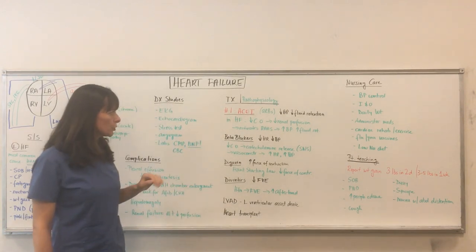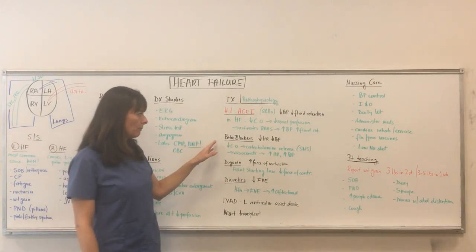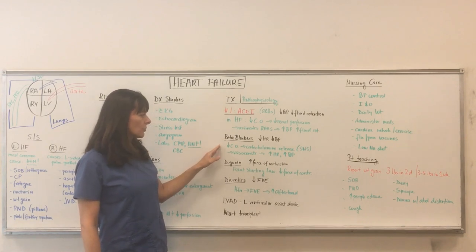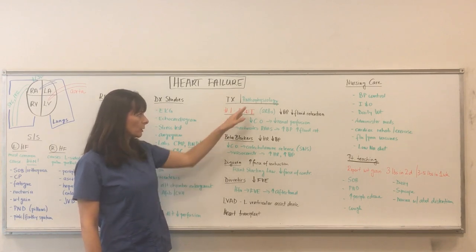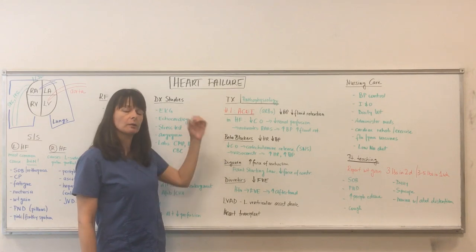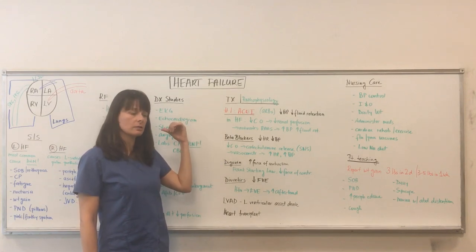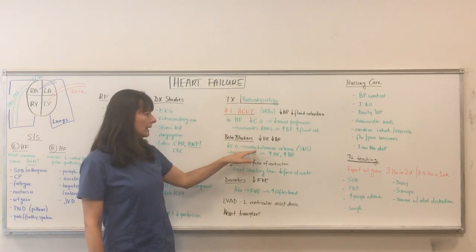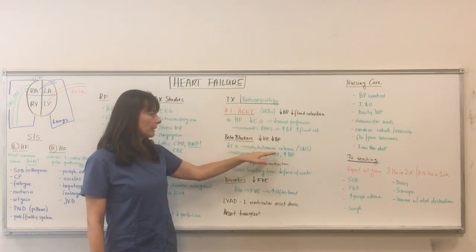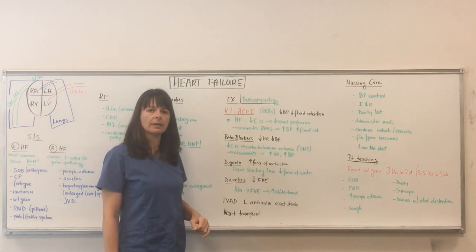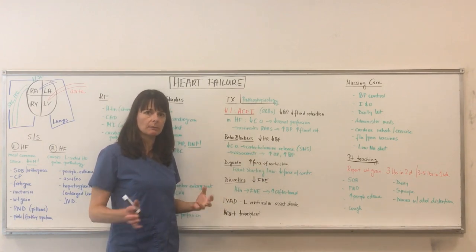Number two: beta blockers. When there is a decrease in cardiac output — when the pathophysiology is decreasing cardiac output because the heart is not working properly — it leads to catecholamine release, which activates the sympathetic nervous system.